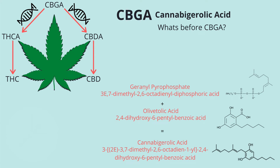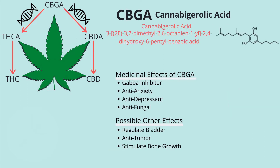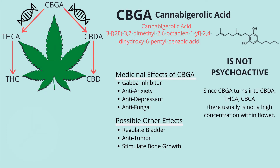Now we know that CBGA is the precursor, but what comes before that? To create CBGA, two chemicals named geranyl pyrophosphate and olivetolic acid come together to create CBGA. You can see those here below. Now that CBGA is created, the effects include GABA inhibition, anti-anxiety, antidepressant, antifungal, and possible properties like helping regulate bladder function, anti-tumor effects, and stimulating bone growth. Also, CBGA is not psychoactive, so there is usually not a high concentration in flower unless it's manually modified — but that's because of enzymes, and we'll talk about that in a little bit.